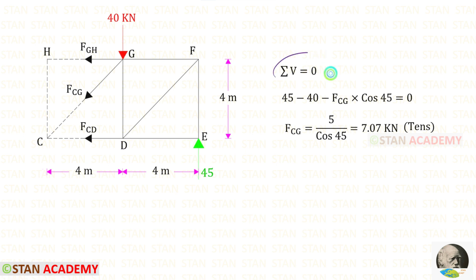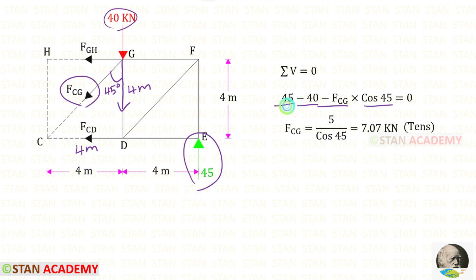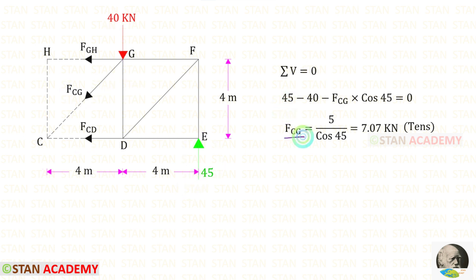Now let us apply sigma V equals 0 to find FCG. FCG is inclined, so we have to resolve it in the vertical direction. To resolve it, we need the angle: the distance of FCD is 4 meters and the distance of GD is also 4 meters, so the angle is 45 degrees. Since FCG is acting downwards, it is negative and we multiply by cos 45. The 40 kN load is also acting downwards so it is negative. The 45 kN reaction is acting upwards so it is positive. For FCG, we get a positive value, meaning it is tensile.